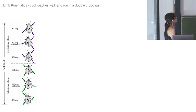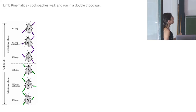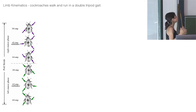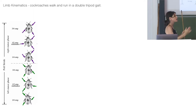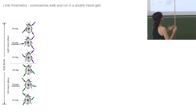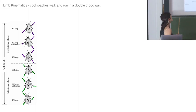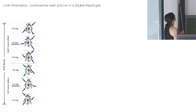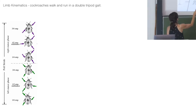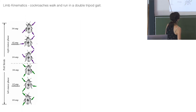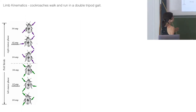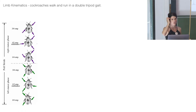Cockroaches and most other insects walk and run in a double tripod gait, proven to be very stable. Creatures with any number of legs tend to alternate movement between right and left sides so the center of mass shifts laterally. With six legs, two legs on one side and one on the other are always on the ground, then this switches — that's the tripod gait.